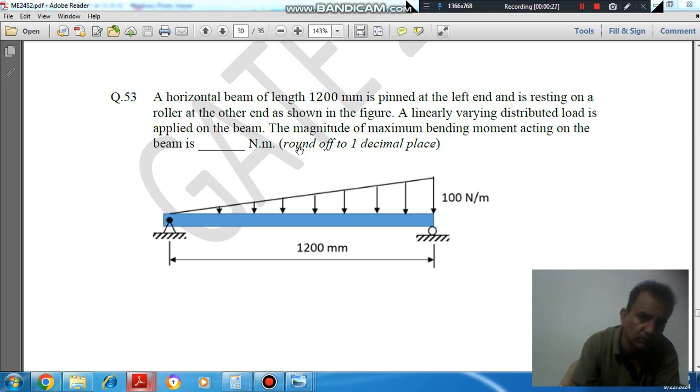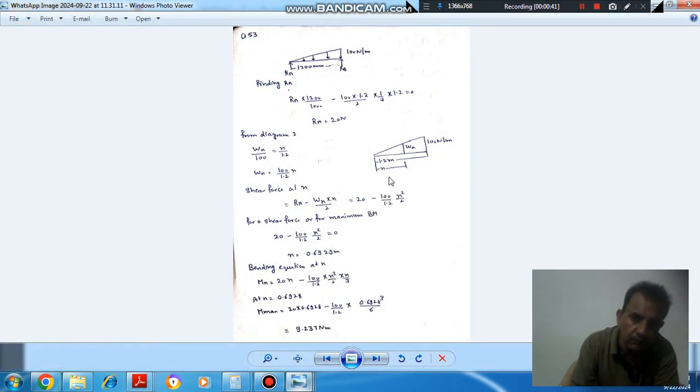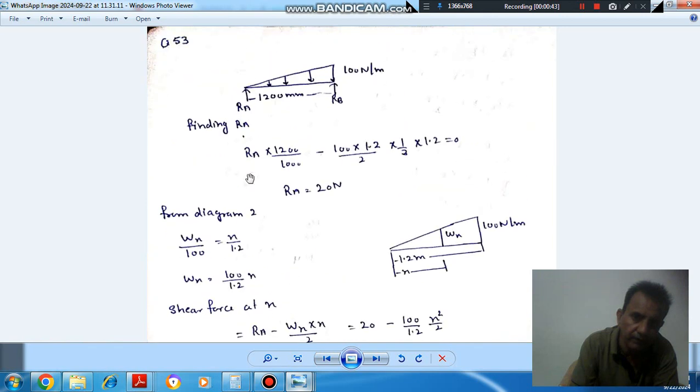The magnitude of maximum bending moment acting on the beam is to be found, rounded to one decimal place. This is 1200 mm, with a 100 newton per meter density varying from 0 to 100 newton per meter. Here first of all we will find out reaction Ra.